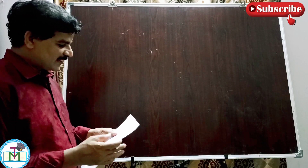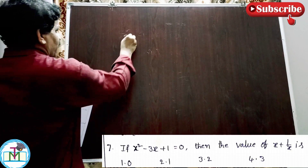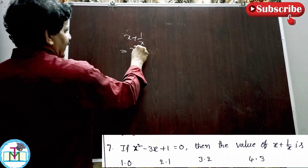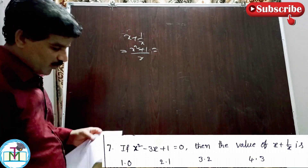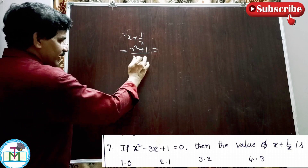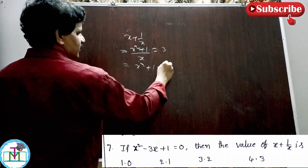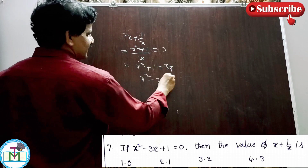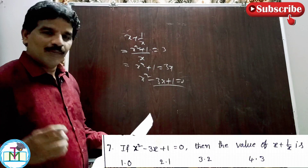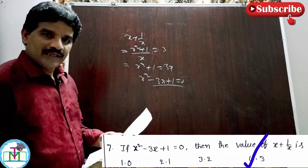Question number 7: If x² - 3x + 1 = 0, find the value of x + 1/x. Taking LCM: (x² + 1)/x. From the equation, x² - 3x = -1, so x² + 1 = 3x. Therefore (x² + 1)/x = 3x/x = 3. So x + 1/x = 3, which is option 4 — the right answer.